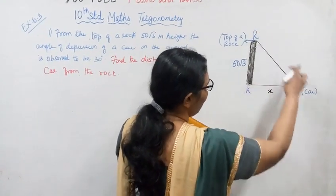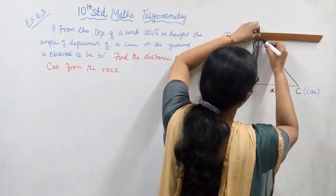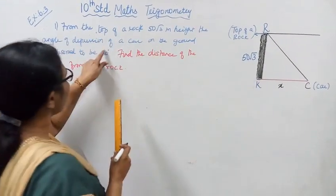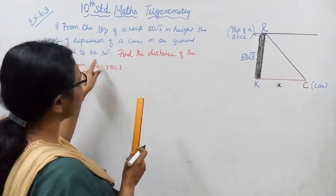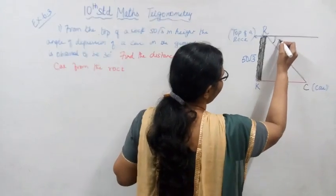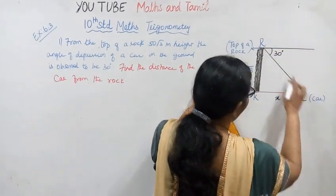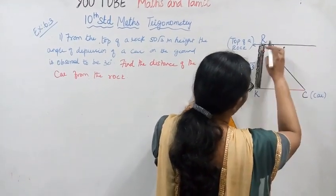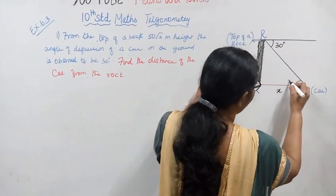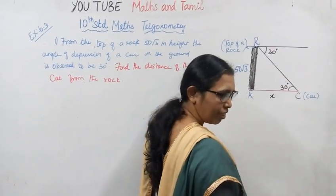The angle of depression of the car on the ground is observed to be 30 degrees. I'll mark this 30-degree angle at the top of the rock, from the horizontal line down to the car.